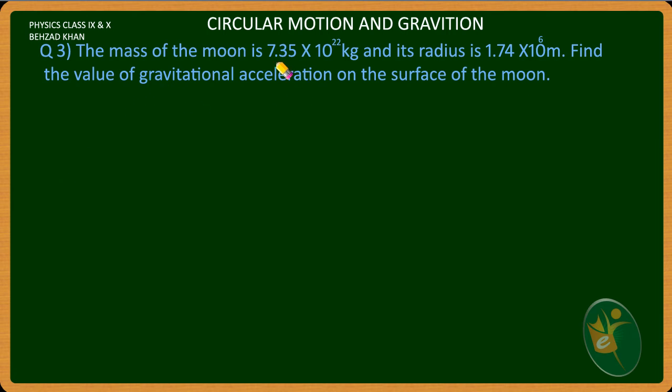The mass of the moon is 7.35 × 10²² kg and its radius is 1.74 × 10⁶ meter. Find the value of gravitational acceleration on the surface of the moon.